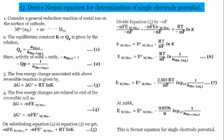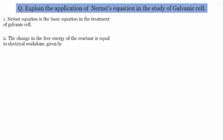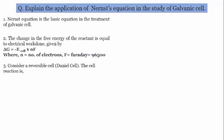This is a very simple equation. Based on this, we will also determine the Nernst equation for the Daniel cell — the application of the Nernst equation in the study of the galvanic cell. The galvanic cell example is the zinc and copper cell that we have already seen. This Nernst equation is the basic equation in the treatment of the galvanic cell. The change in free energy of the reactant equals electrical work done: ΔG = −E(cell) × nF. The Daniel cell reaction is: Zn(s) + Cu²⁺(aq) ⇌ Zn²⁺(aq) + Cu(s).